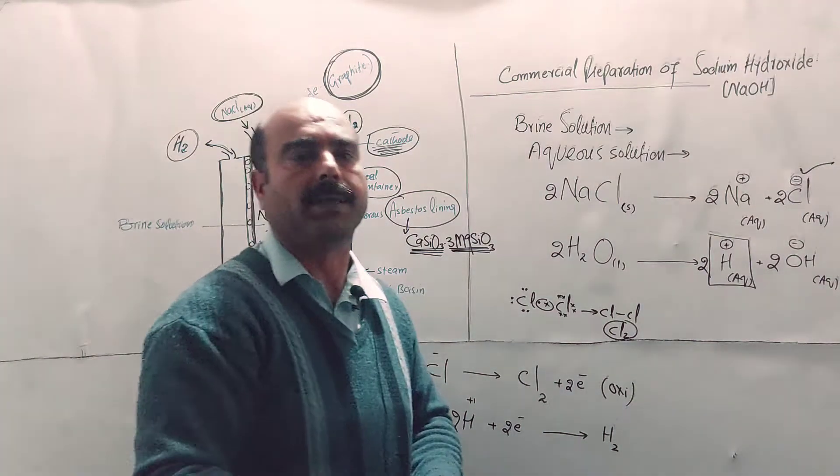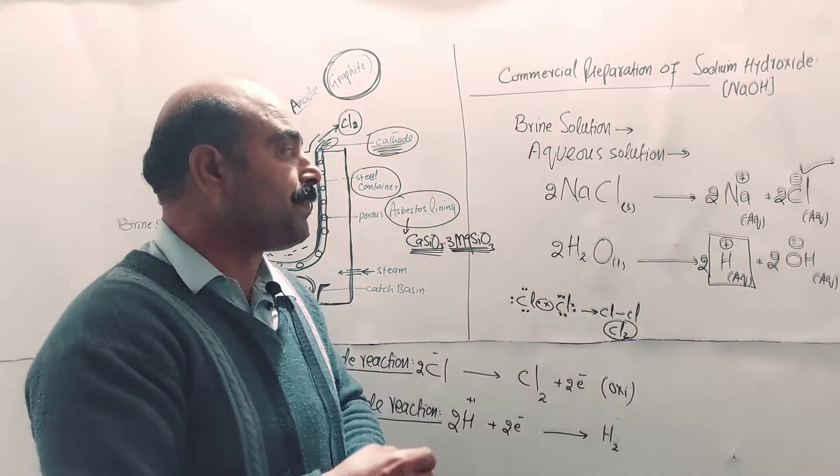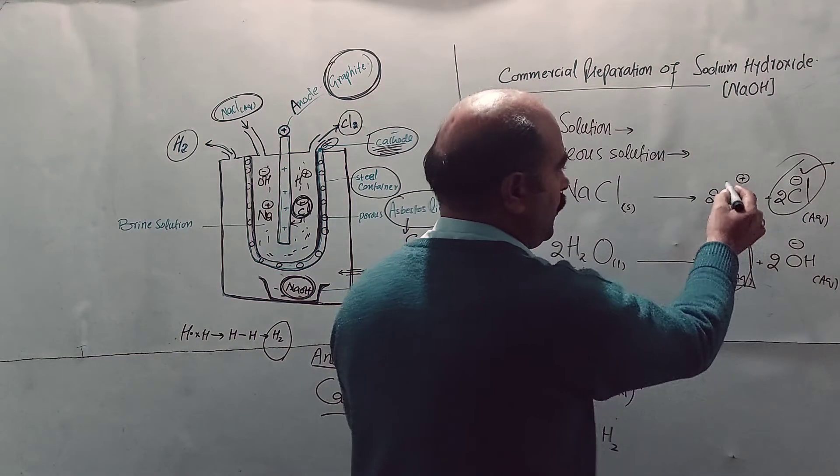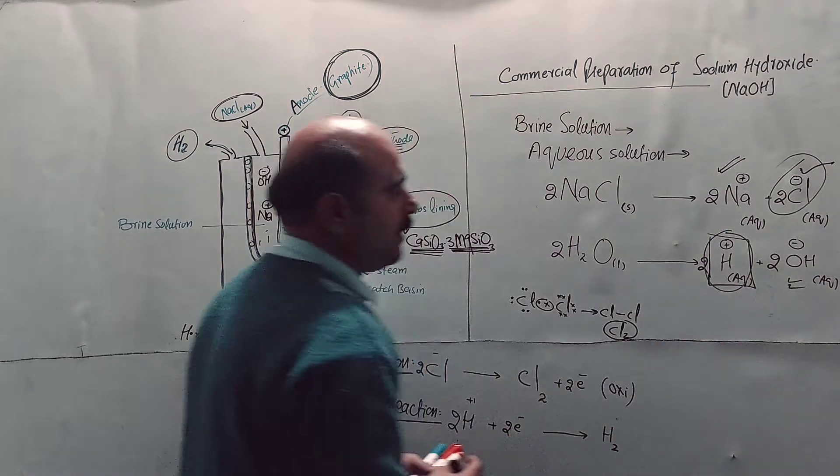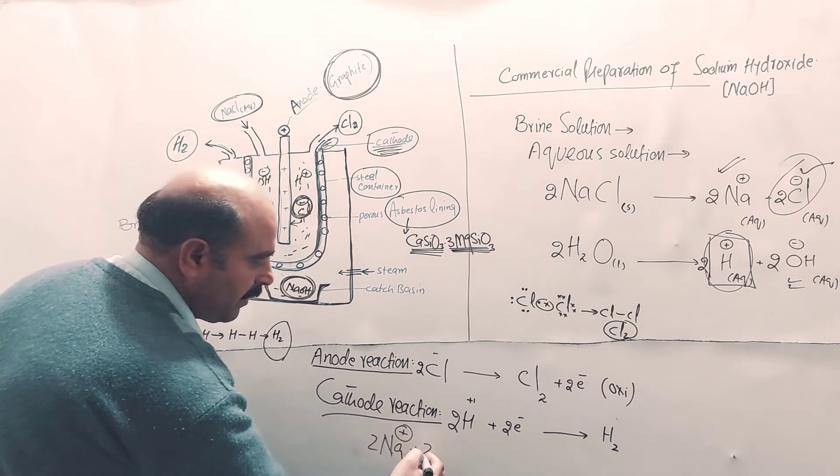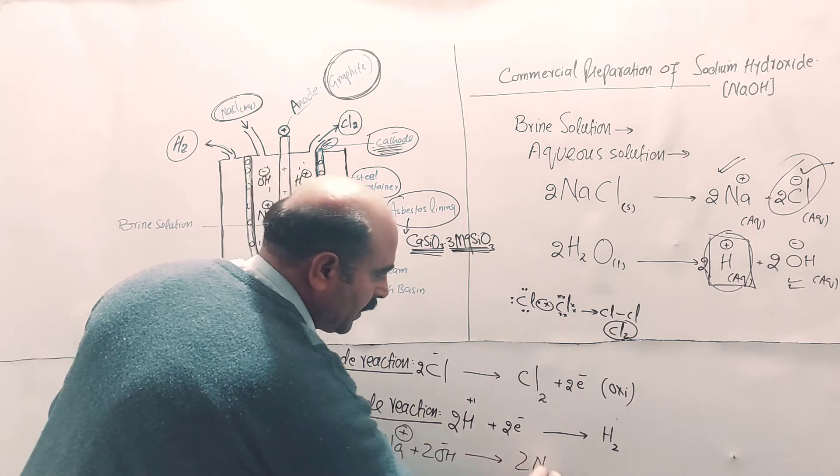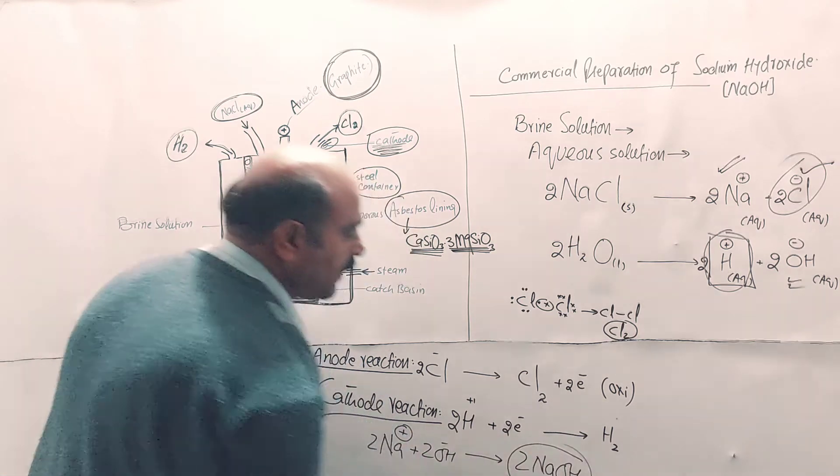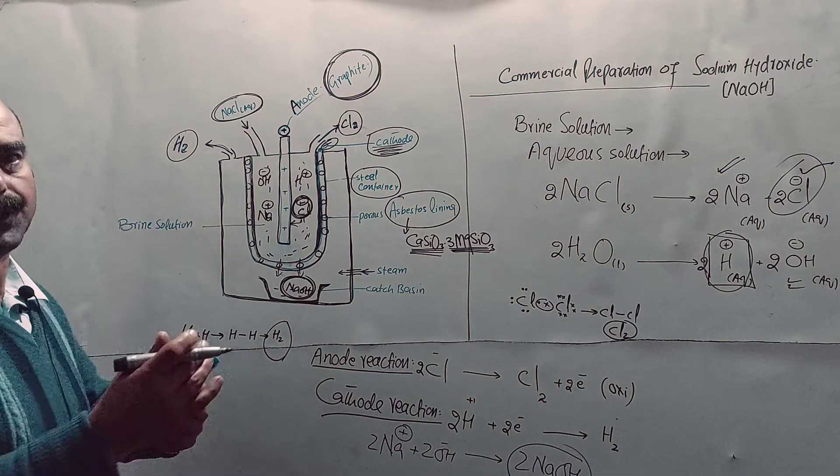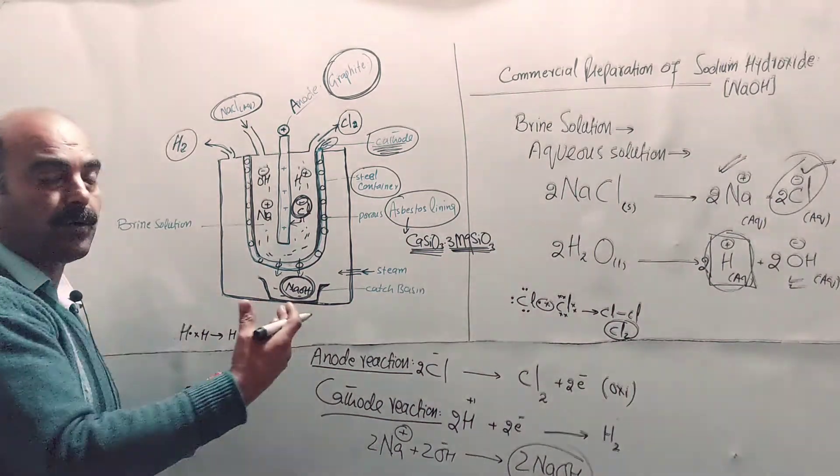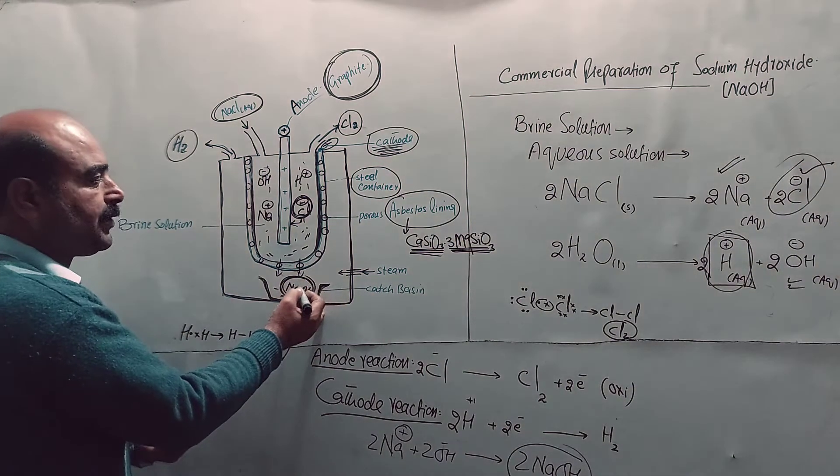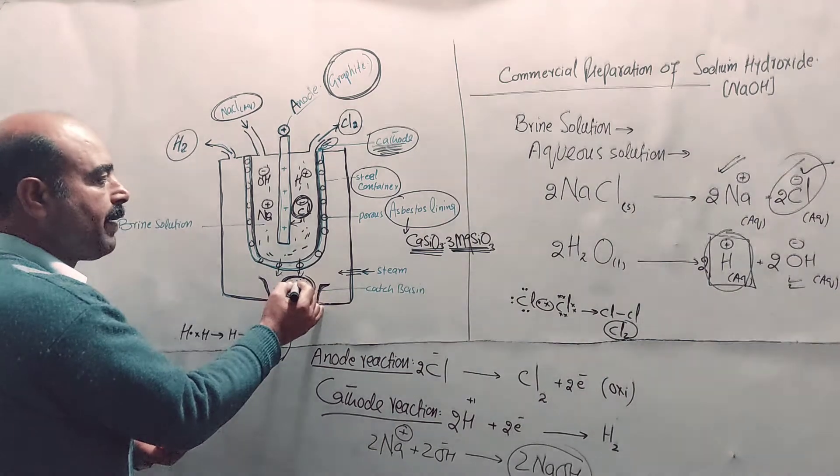The process continues. Chloride ions from the solution are consumed, hydrogen ions are consumed. What remains are sodium ions and hydroxide ions. Two moles of sodium ions plus two moles of hydroxide ions are converted into two moles of sodium hydroxide. Sodium hydroxide passes through the pores and collects in the cage basin below. To remove water, steam is passed through, drying it to obtain solid sodium hydroxide in the collection basin.